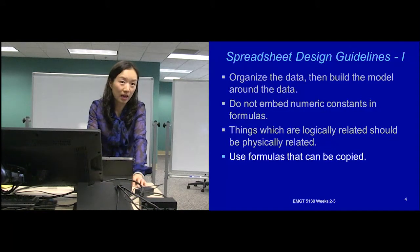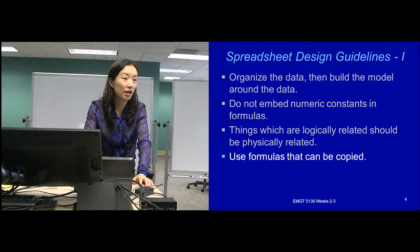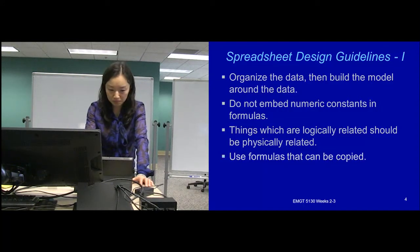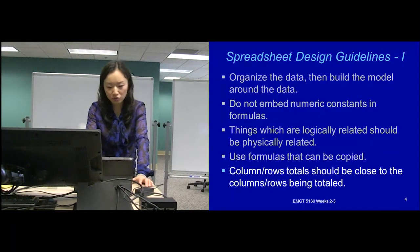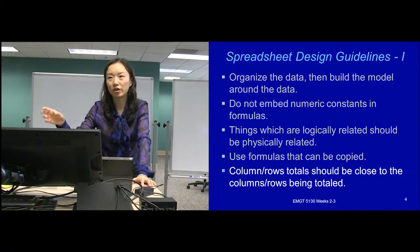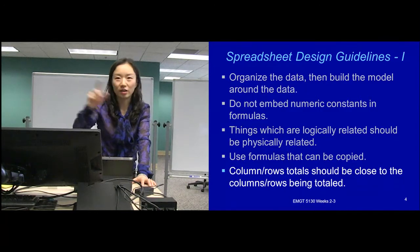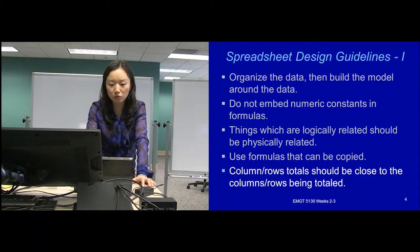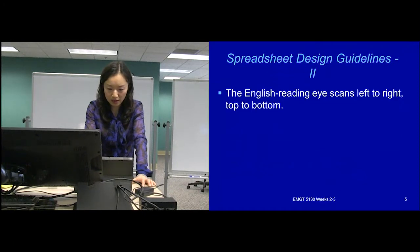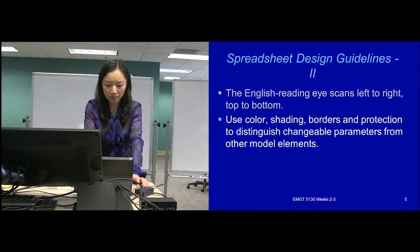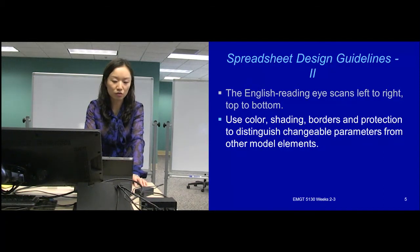Use formulas that can be copied — there are different tricks in Excel that make it easy; you just type a formula once and copy it all the way. Column and row totals should be close to the columns and rows being totaled — you don't want people to have to search the entire spreadsheet to find which cells are being summed. The English reading eye scans from left to right, so when you relate things, organize them to be read from left to right. Use colors, shadings, bolding, and protections to distinguish changeable parameters from other elements.